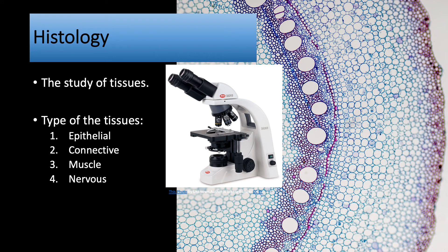Physiology is the study of tissues, and you require a microscope to perform this science. We have four types of tissues in our body: epithelial, connective, muscle, and nervous.